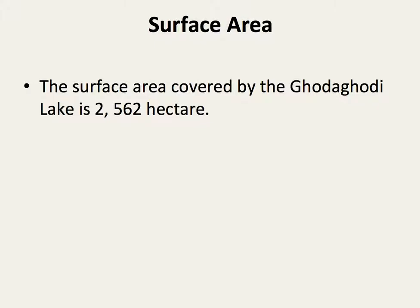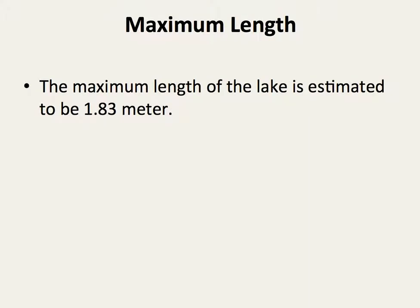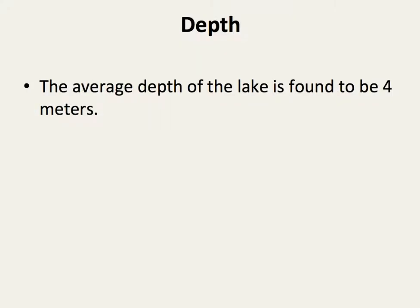Surface Area: The surface area covered by Godagodi Lake is 2,562 hectares. Elevation: It is located in a low elevation area with an elevation of 205 meters above sea level. Maximum Length: The maximum length of the lake is estimated to be around 1.83 kilometers. The average depth of the lake is found to be around 4 meters.